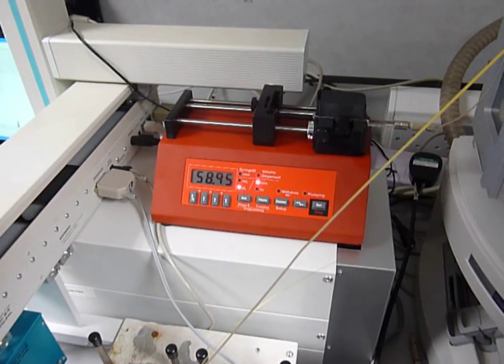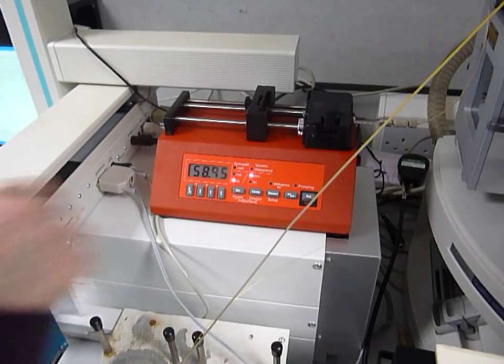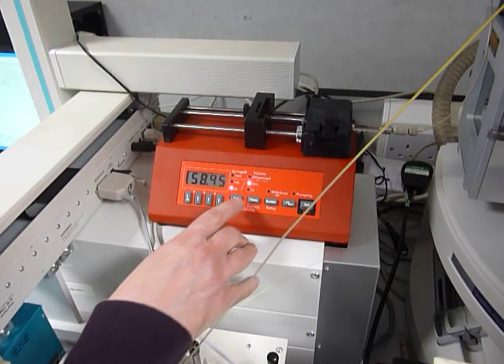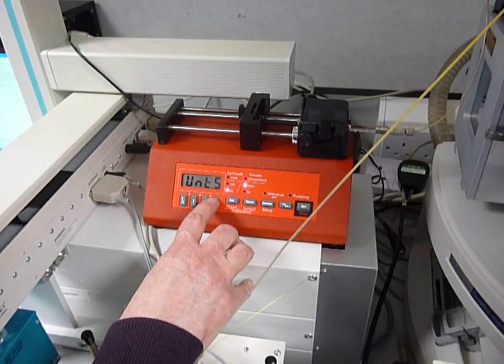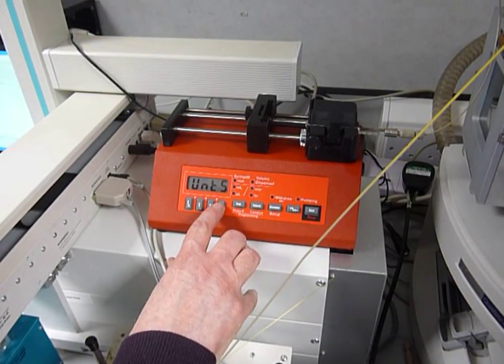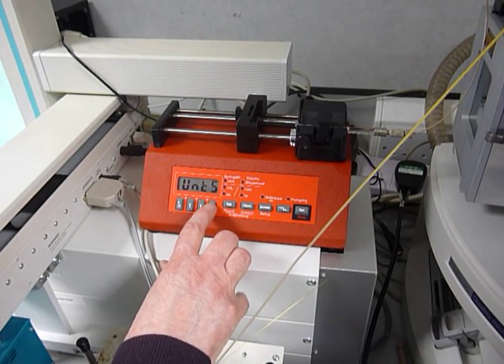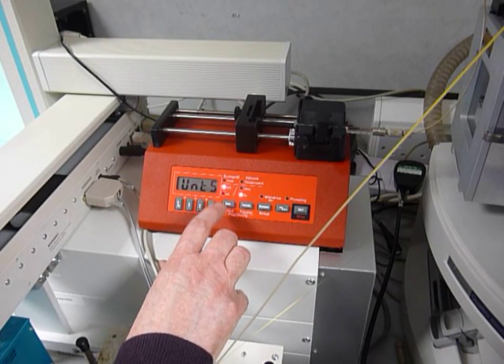First of all you need to set up the rate that you want to infuse. In here at the moment it's at two microliters per minute, but with it actually off you can actually change that to various units, either mils per hour or microliters per hour. In my case we then change it to mils per hour.